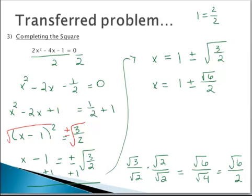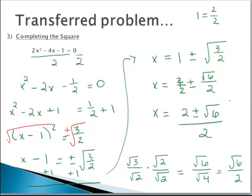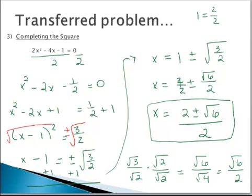You could see this written a different way. Since 1 is the same as 2 over 2, you could write it as 2 plus or minus the square root of 6, all over 2. The form 1 plus or minus the square root of 6 over 2 is also okay, but the combined-fraction form is probably how you'll see the answer written.